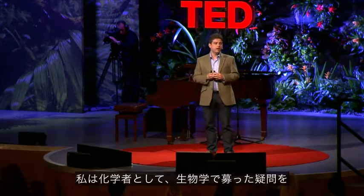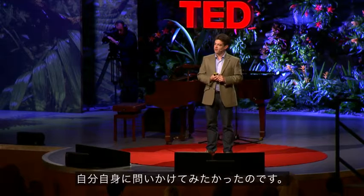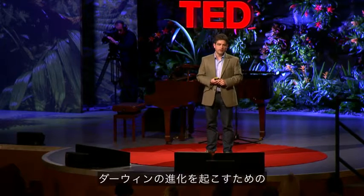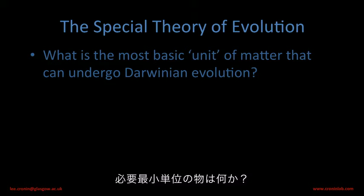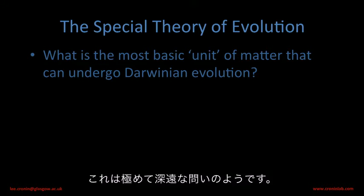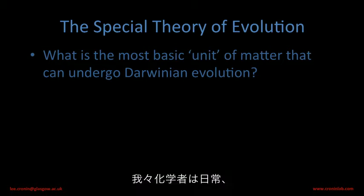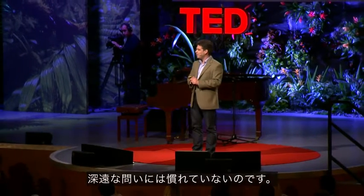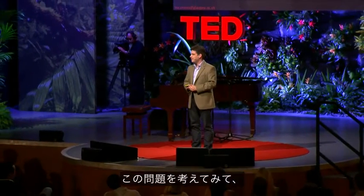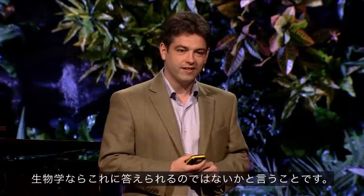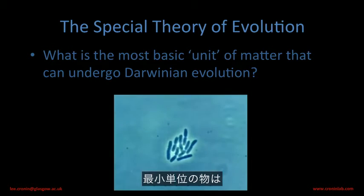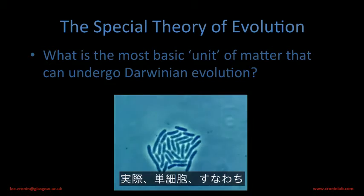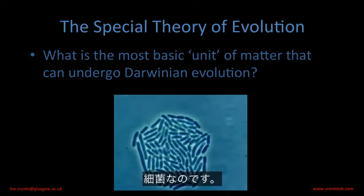So bearing that in mind, as a chemist, I wanted to ask myself the question: what is the minimal unit of matter that can undergo Darwinian evolution? And this seems quite a profound question. As a chemist, we're not used to profound questions every day. But suddenly I realized that biology gave us the answer. The smallest unit of matter that can evolve independently is in fact a single cell — a bacteria.